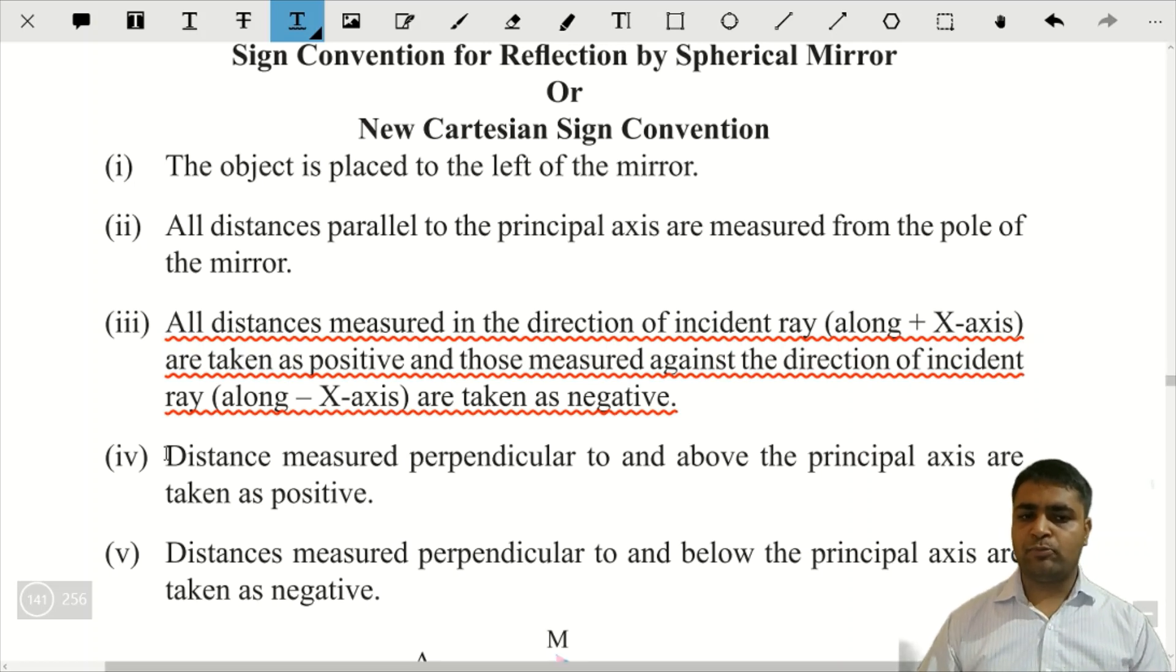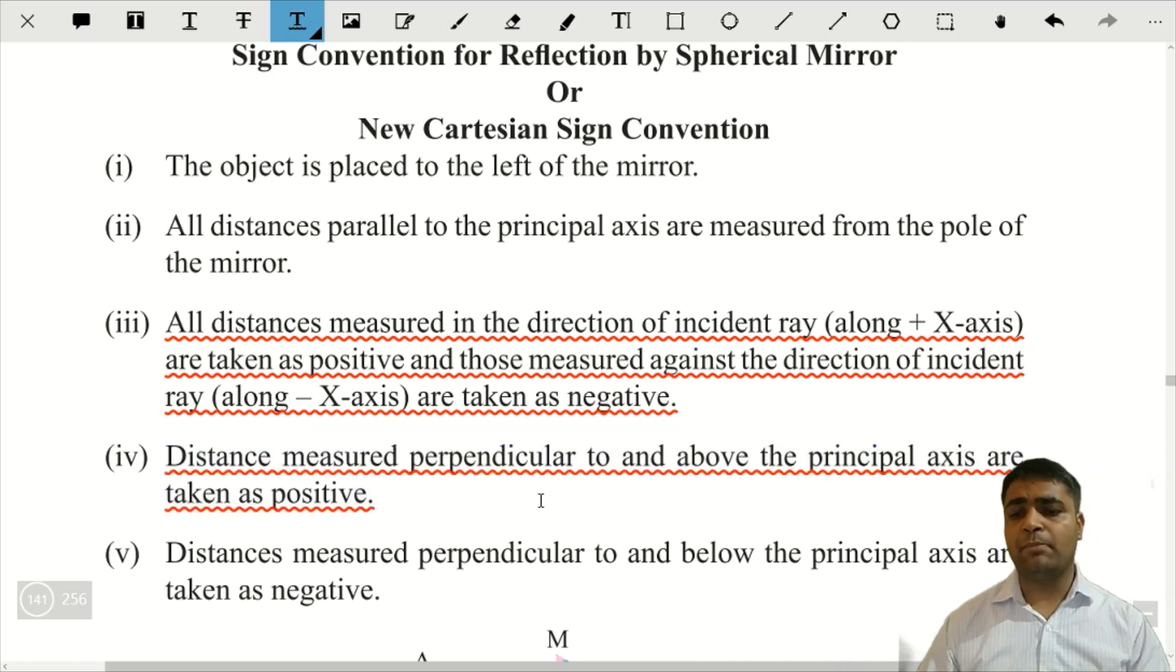The fourth point is that distance measured perpendicular to and above the principal axis are taken as positive. Jitne bhi distances principal axis se oopar banengi, hai na? Toh woh kya honge? Positive.